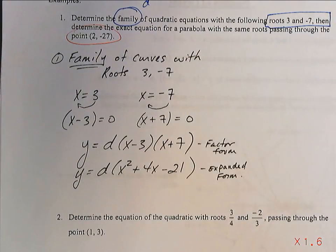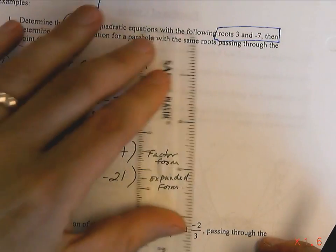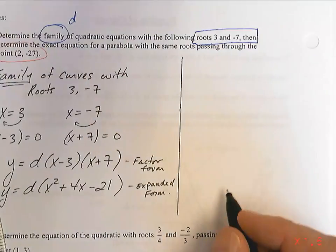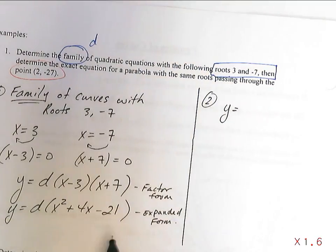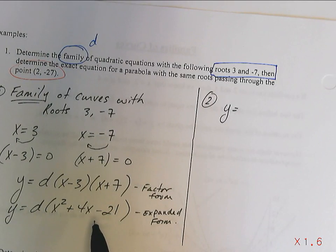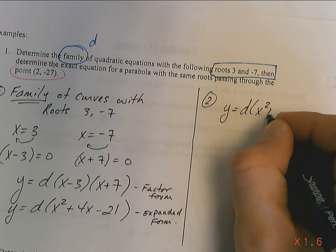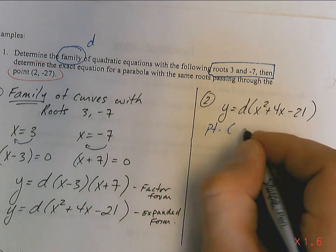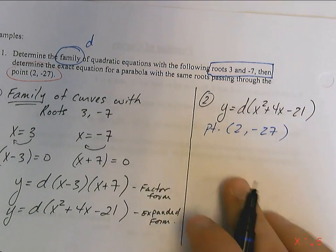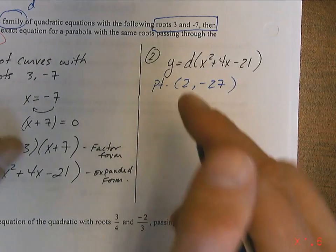So those is for the family. How about the second part of this question? The second part asks for the specific curve. So, using the family equation, now I can choose either the factored form or the expanded form. I have someone watching here. I'm going to ask them, do you want to use factored or expanded? Expanded is what he's saying. So we're going to use y equals d times x squared plus 4x minus 21. And we're going to use the specific point. The point was 2 comma negative 27. Some people ask me where did I get that point? It's in the question. I can't just make that up.